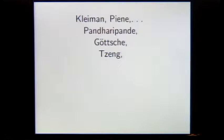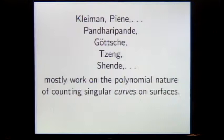So names, as in the Bible, right, I mean, it's a subject of a very long history, and I won't even dare to start talking about history, but more or less, more recently, the names of Stephen Kleiman, Piene, Pandharipande, Göttsche, Tzeng, Shende, and I'm forgetting at least a dozen, or twice, or two dozens of other names. And the point is that they mostly work on the question of the polynomial nature of the answers. I'll be a little more precise about that. And most of these works are about counting singular curves on surfaces, curves moving appropriately in a family, and sometimes also the surface moving appropriately.